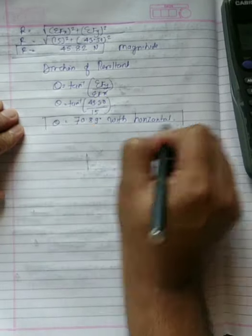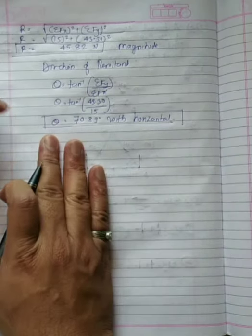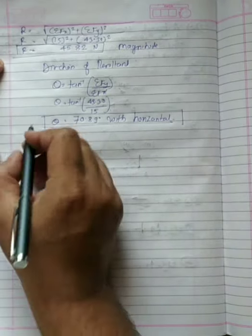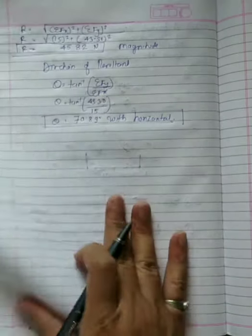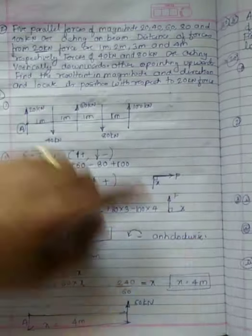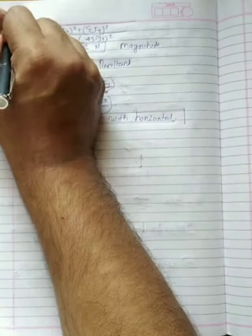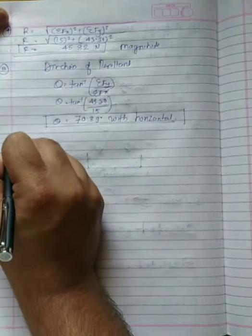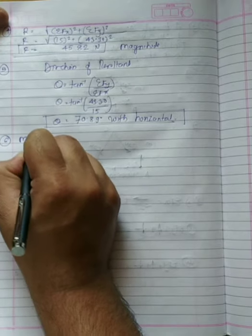Next step is to find the moment. The direction of the resultant is determined. The fourth step gives the result, and the sixth step is to find the moment about point A.